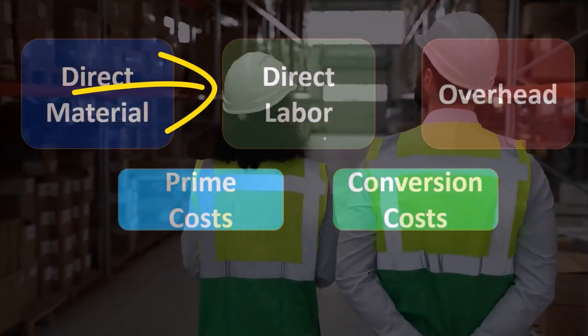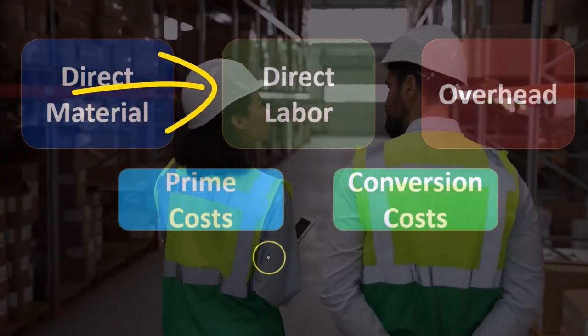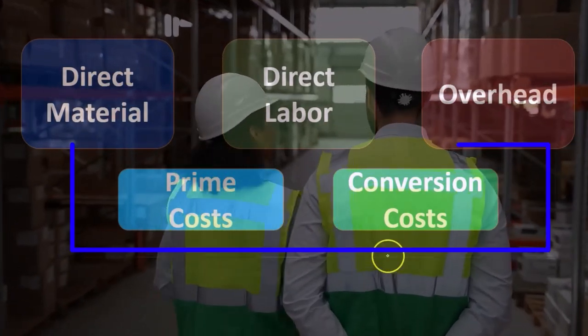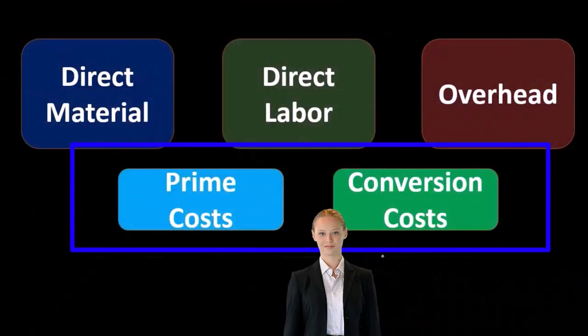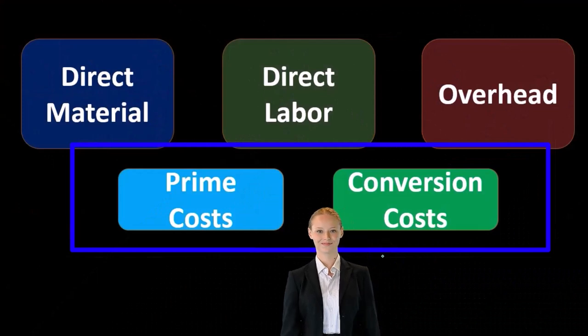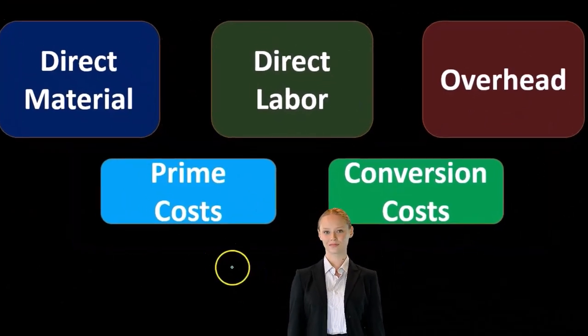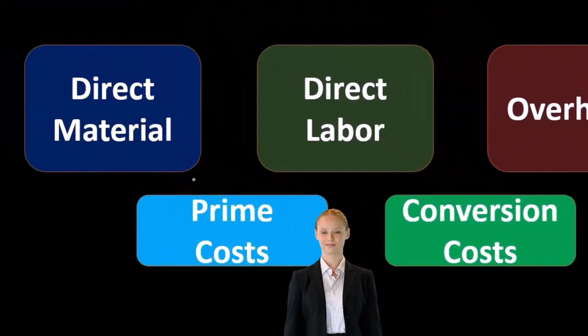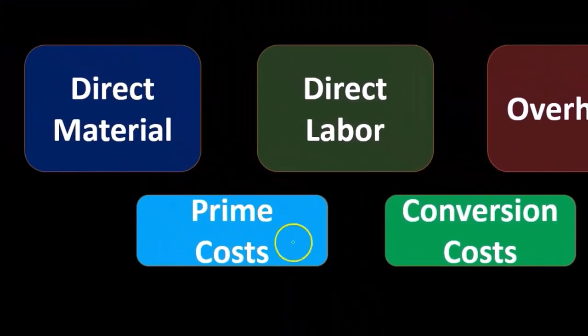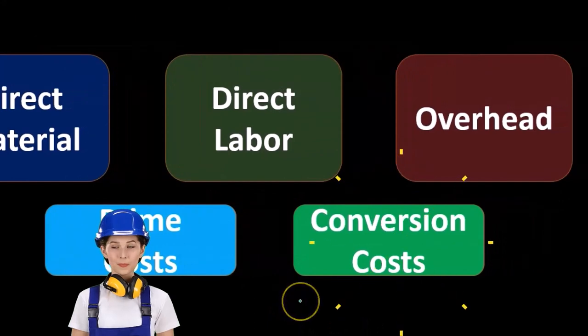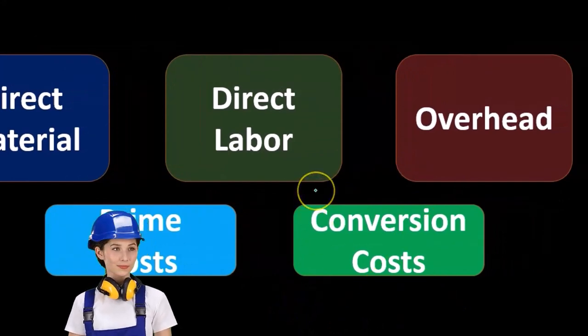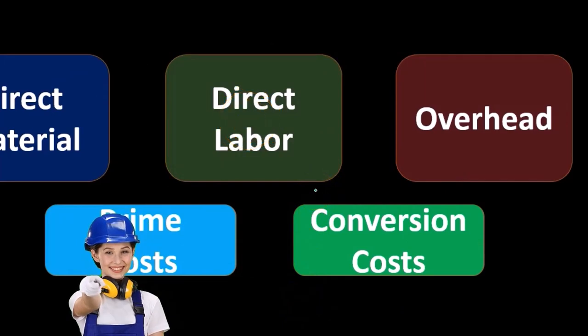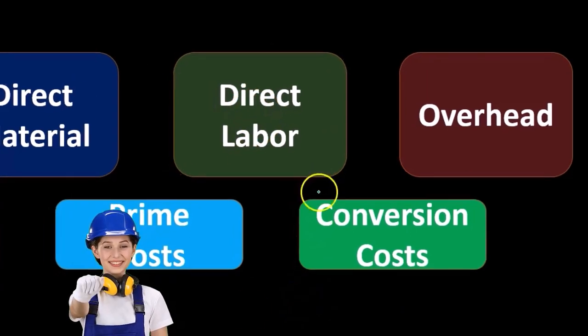This direct labor becomes confusing because it's both a prime cost and a conversion cost. When we compare this to direct versus indirect costs, prime costs and direct costs have the same two components, but for different reasons. The conversion is not the same as the indirect costs because conversion represents us converting the inventory, which will include direct labor as well as the overhead.